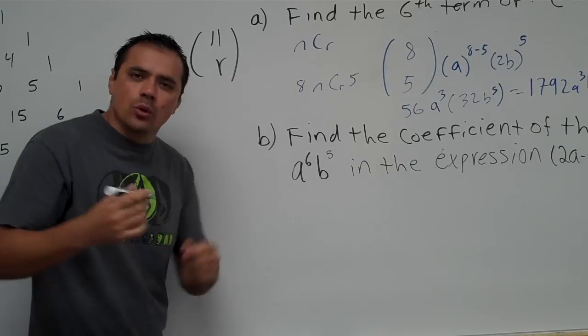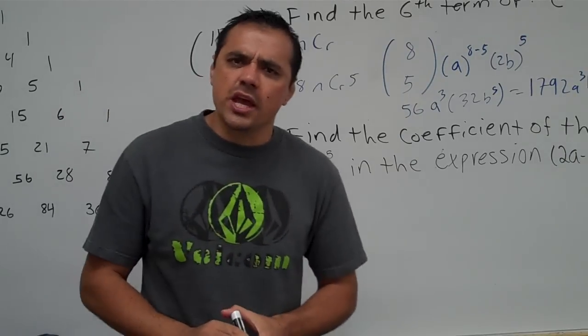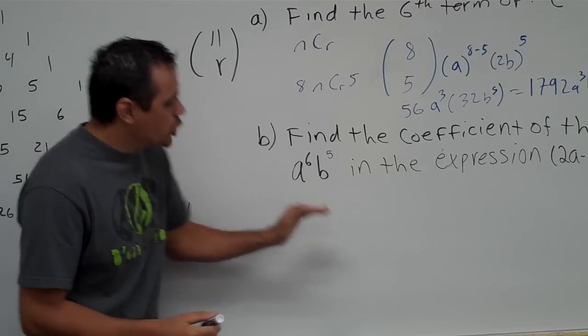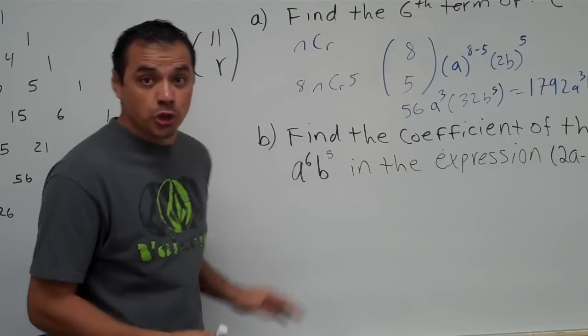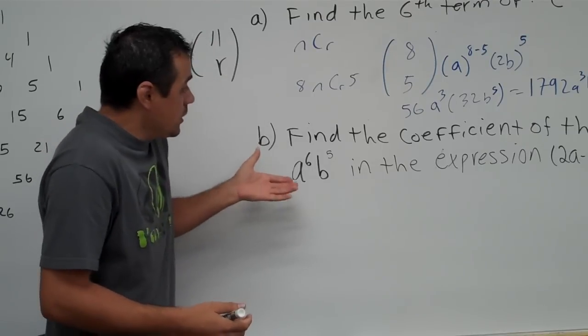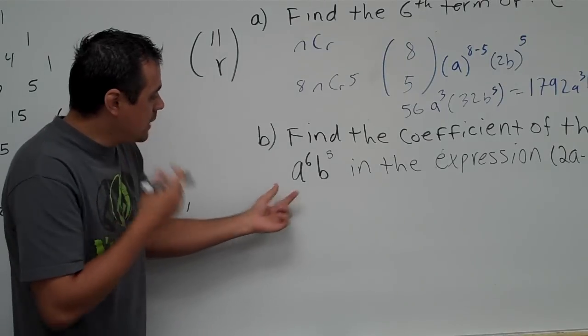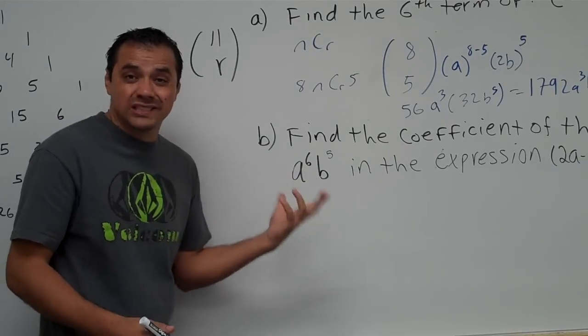Now, the part where we have to do a little bit of thinking is, how do we get r? Well, r, remember, is which term in your row? Which term is this number right here? So, let's figure it out. Now, think about it. The a right here has the power of 6.